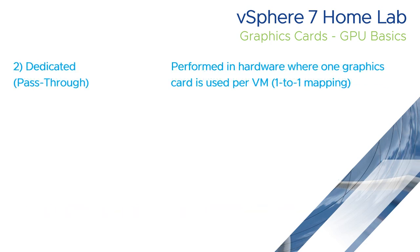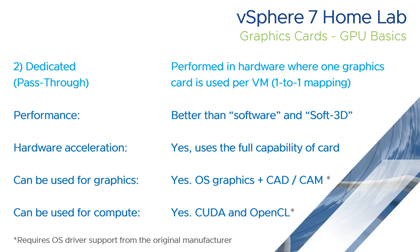The next one is dedicated pass-through. This is where we do a PCI pass-through — a hardware device in a server mapped directly to a VM, with a one-to-one mapping of the video card directly to a virtual machine. Performance is much better than Soft3D because you've got hardware acceleration and that VM has full use of the card's full capability. It can be used for graphics — not just OS graphics, but CAD, CAM, and any kind of imaging — and it can be used for compute, so things like CUDA and OpenCL.